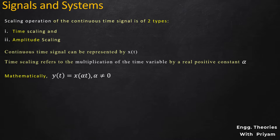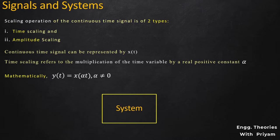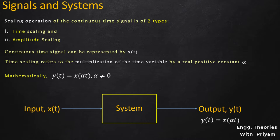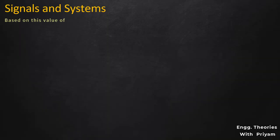Mathematically, this time scaling operation can be shown as Y(T) = X(alpha*T), where alpha cannot be equal to zero. Consider a system which performs time scaling: the input is X(T) and the output is Y(T), which is the time scaled version of the input signal, or Y(T) = X(alpha*T).